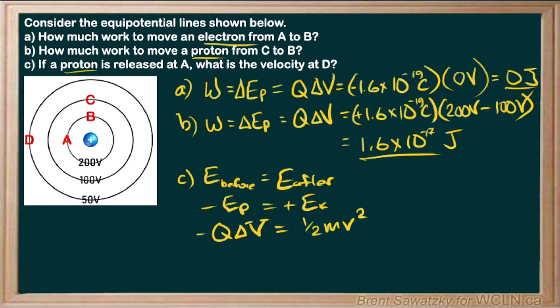So we rearrange this. We are solving for v, so let's rewrite this formula solved for our velocity, the lower case v. And our equation would be the square root of 2Q capital V, change in voltage there, all over the mass.